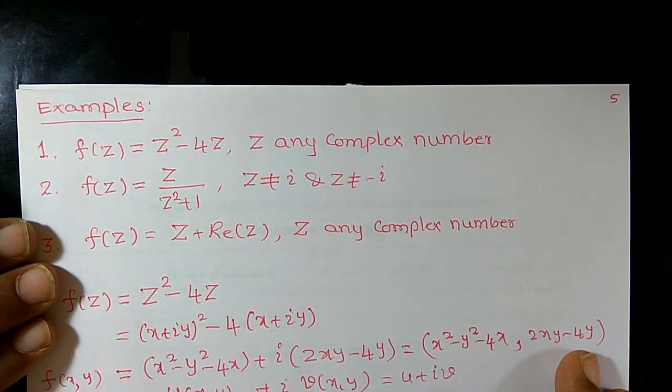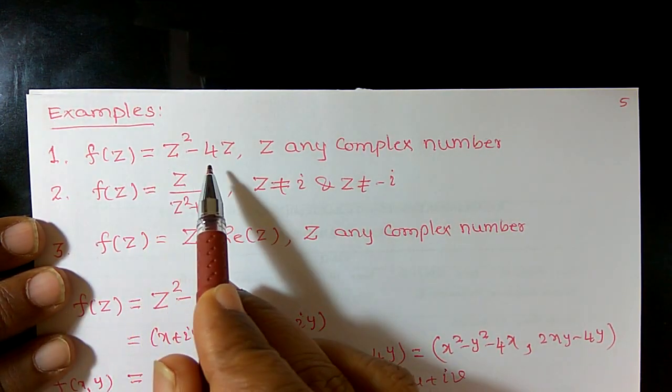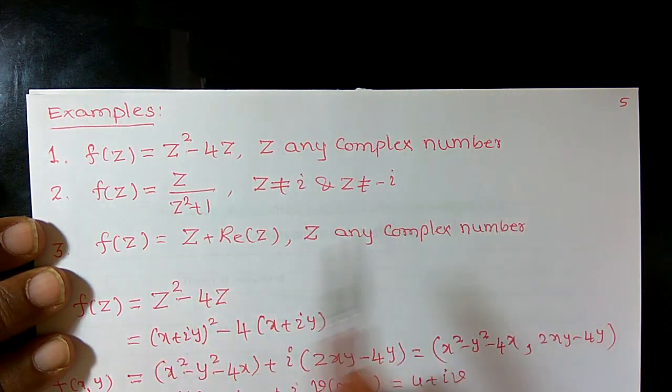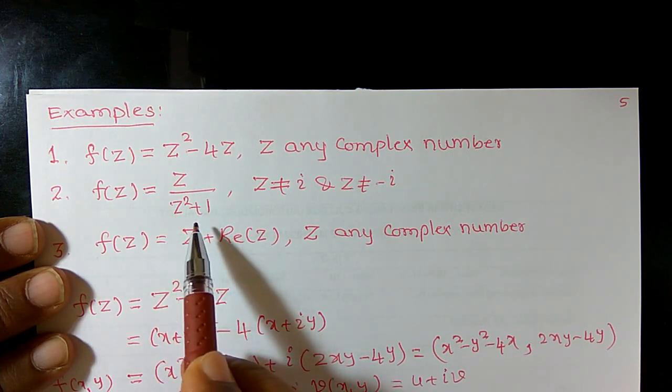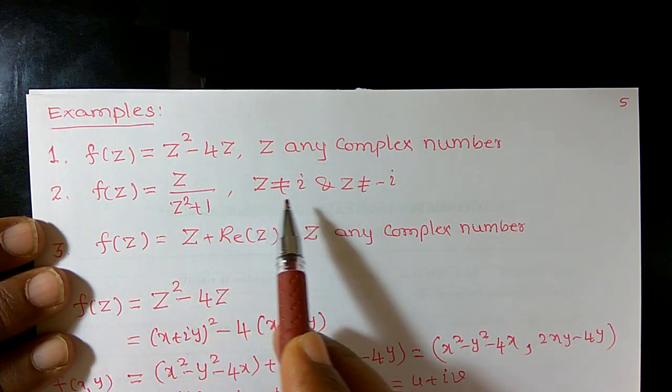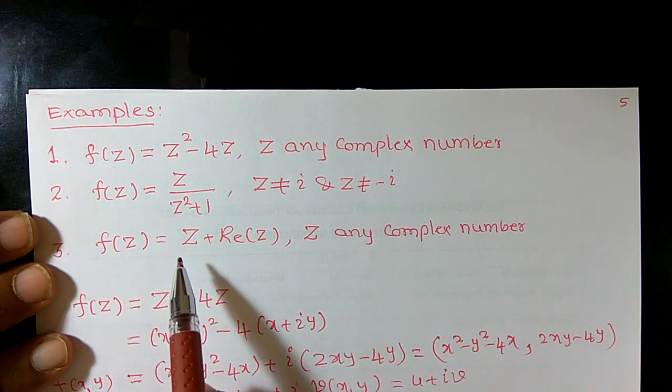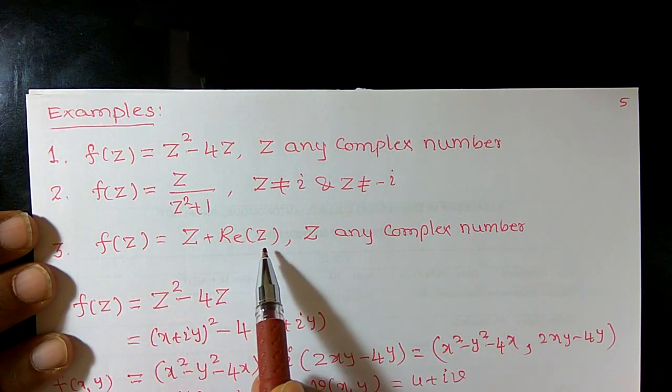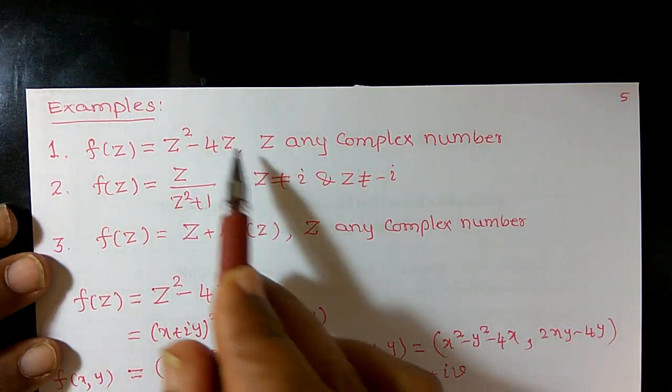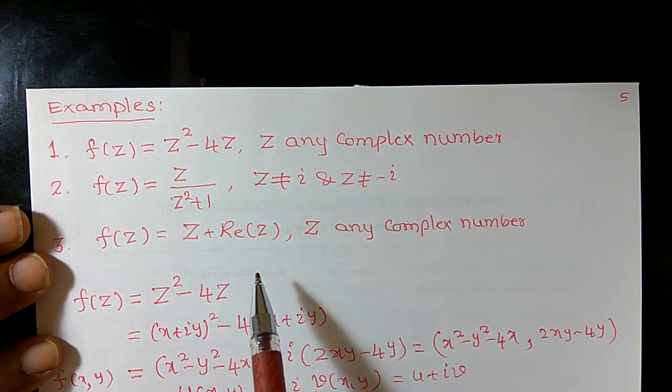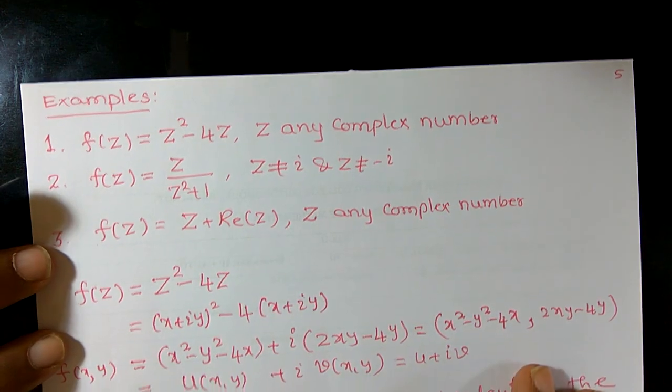I can use some examples for complex valued functions. Say for example, f(z) = z² - 4z where z is any complex number. Or f(z) = z/(z²+1), z ≠ i and z ≠ -i. f(z) = z + Re(z), again z may be any complex number. So it means these complex numbers can be represented by using the symbol w = f(z).